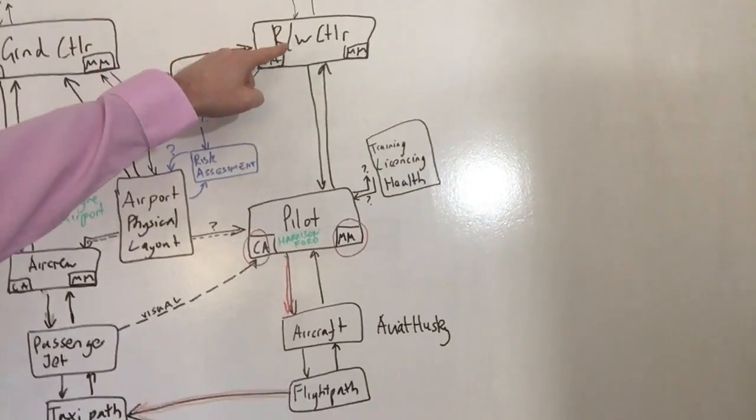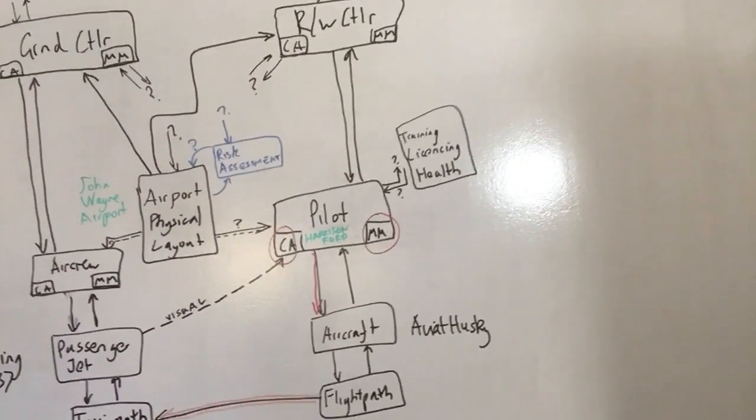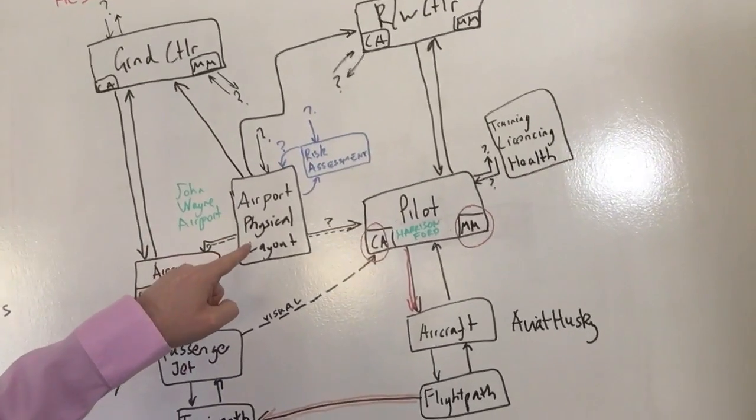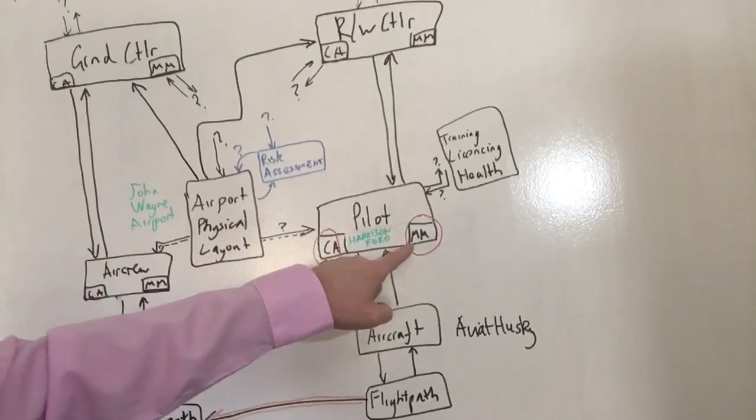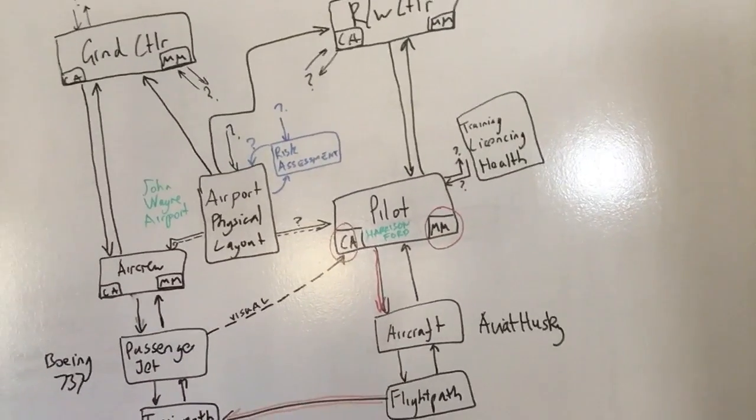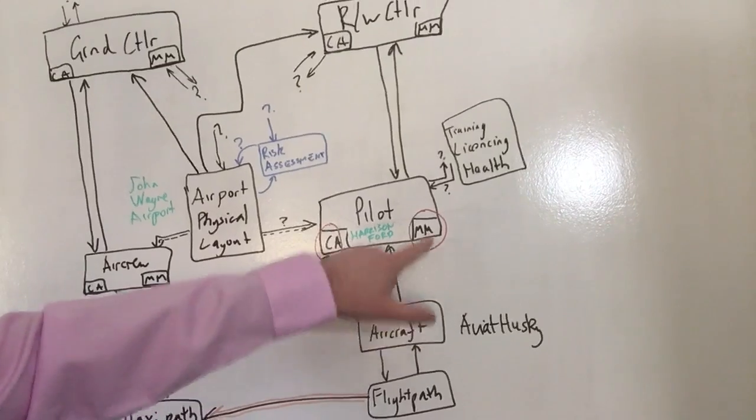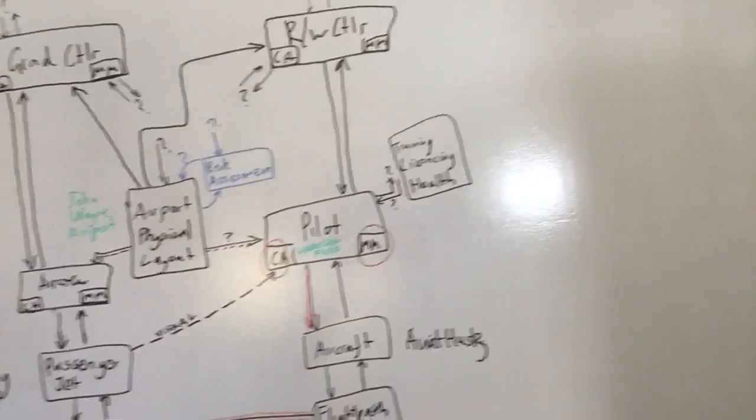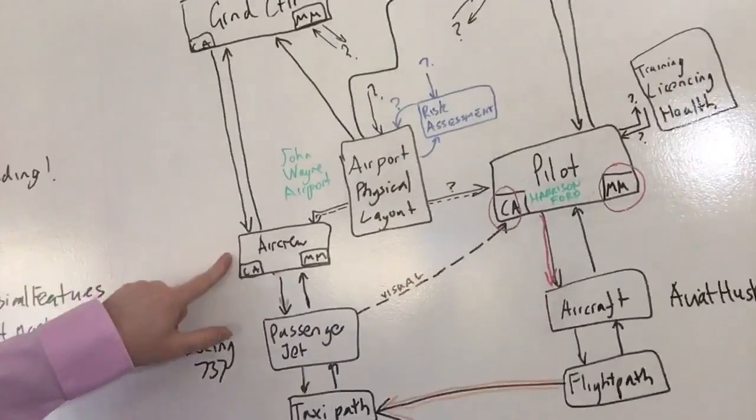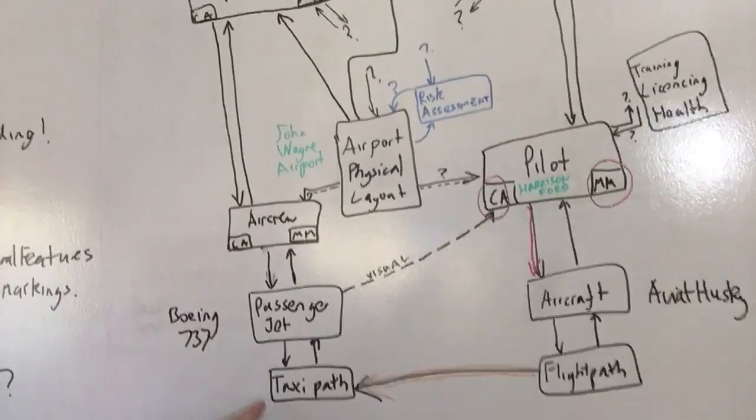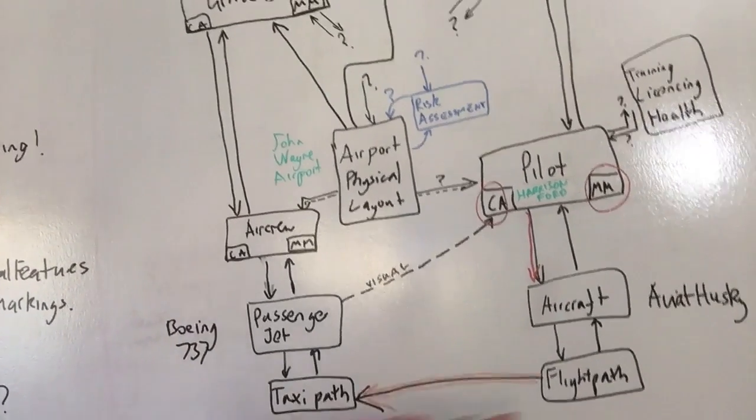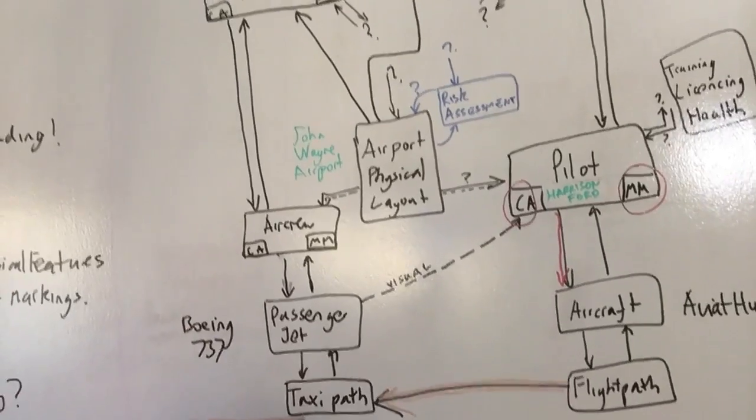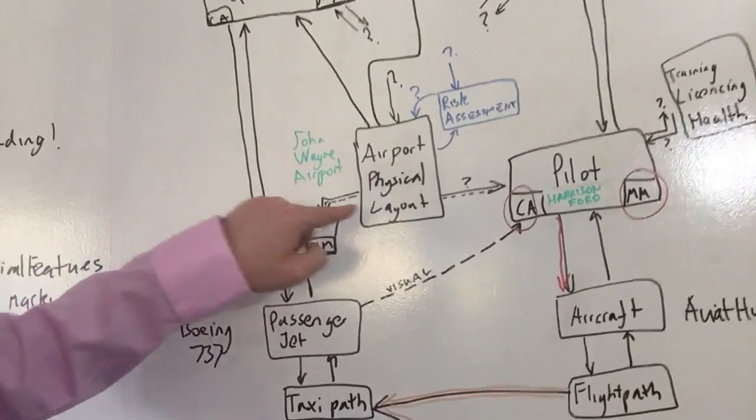So looking back up the control structure then, so the pilot is under the control of the runway controller. Did the runway controller issue any commands or lead to any issues with Harrison's view of the world? Was it that the airport physical layout had interacted and provided information to the pilot that led them to have an inappropriate mental model? Was it that some issues with training or licensing or the pilot's health, did he have issues with his eyesight for example? And then moving back over here, the air crew of the passenger jet. Well why was the passenger jet parked where it was? If it was clear that there was a potential conflict between an aircraft coming into land and one on the taxiway, then why was that aircraft in that position?